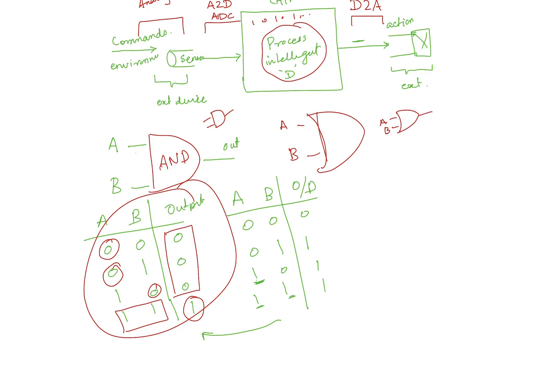These are the basic components. You can also have three-input, four-input, or even six-input AND gates — as long as any one input being 0 makes the output 0, and all inputs being 1 makes the output 1. Similarly, OR gates can have multiple inputs. These define unique output states based on input combinations.